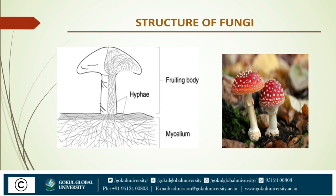In higher filamentous fungi, the protoplasm of hyphae is interrupted by cross-walled septa. In lower filamentous fungi, hyphae are long and multinucleated. Hyphae containing genetically identical nuclei are called homokaryotic, while hyphae containing genetically non-identical nuclei are called heterokaryotic hyphae. The portion of hyphae that obtains nutrients is called vegetative hyphae, whereas the portion concerned with reproduction is called reproductive or aerial hyphae.